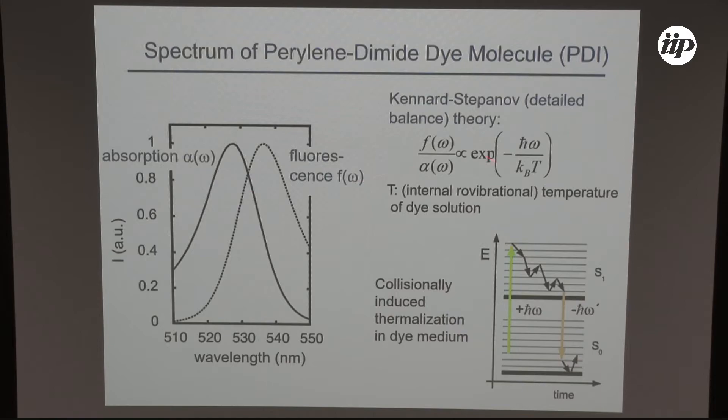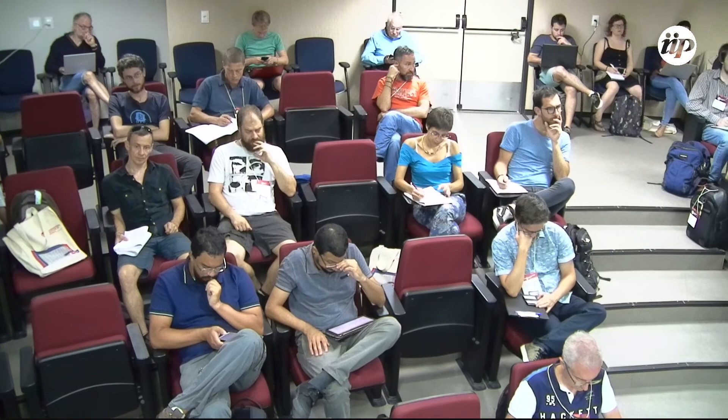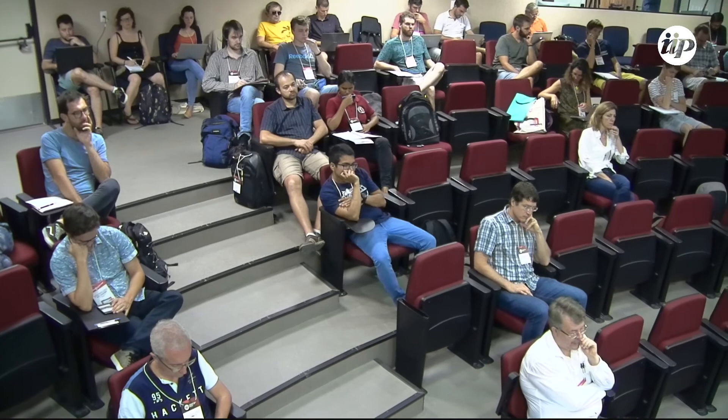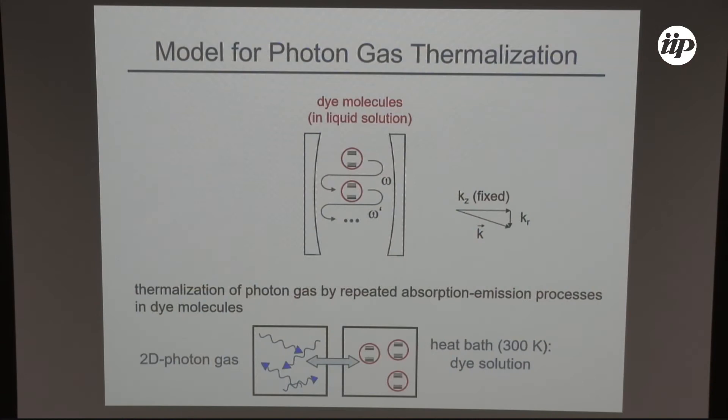What happens if you absorb a high-frequency photon? Before it emits, the dye molecule relaxes to a lower vibrational level — you get a Stokes shift. After repeated Stokes shifts, you normally run out of resonance in free space and thermalization stops. But within our micro-resonator, we have a low-frequency cutoff and we obtain a thermalized spectrum on top of that cutoff. Our model is that subsequent absorption and re-emission events thermalize the transverse degrees of freedom of the photon wave vector, while the longitudinal wave vector is fixed by the low-frequency cutoff. So we have a two-dimensional photon gas coupled to the dye molecules, which act as a heat bath.